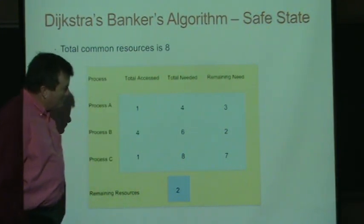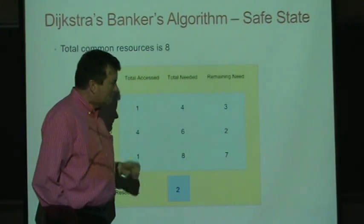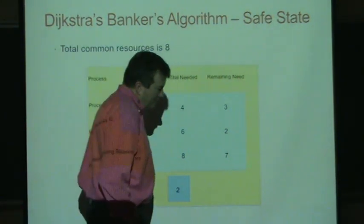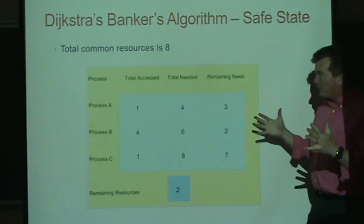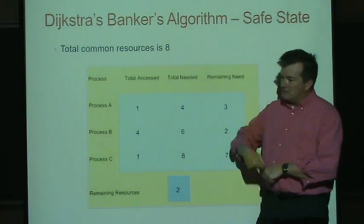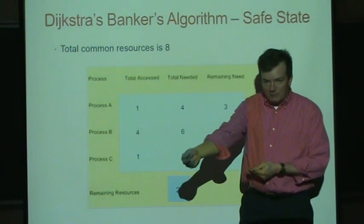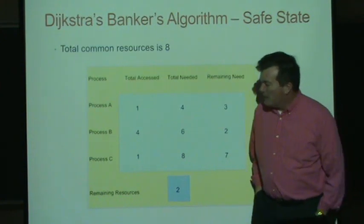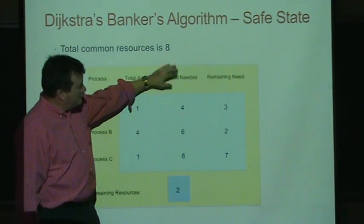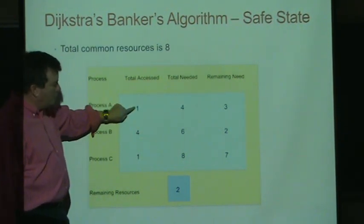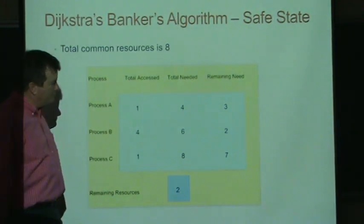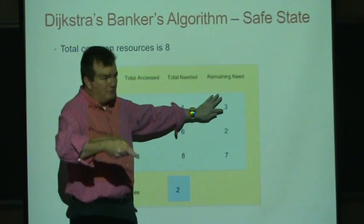Dijkstra, a famous computer scientist, came up with an algorithm called the Banker's Algorithm to determine whether to give out a resource from a pool. It's called the Banker's Algorithm because it's like a bank lending money: you can lend out money, but when it's all lent out, you can't lend to new people until existing borrowers pay it back. Suppose we have a pool of eight identical resources. Process A holds one and has a maximum need of four. Process B holds four with a maximum need of six. Process C holds one with a maximum need of eight. The OS has two left.